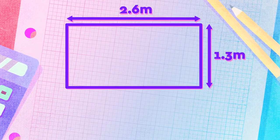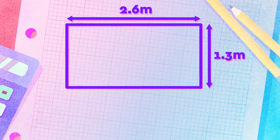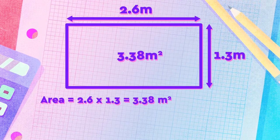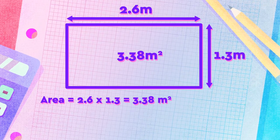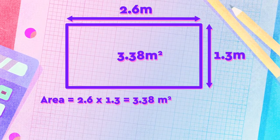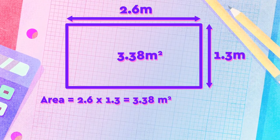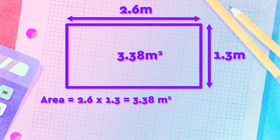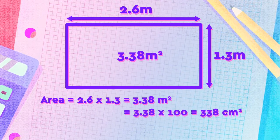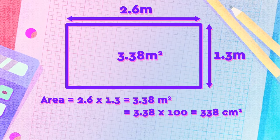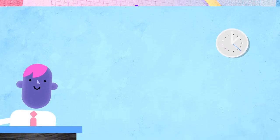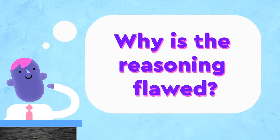Let's take a look at an example. We have a rectangular shape with sides 2.6 meters and 1.3 meters. The area of this shape is 3.38 meters squared. If asked to express the answer in centimeters squared, many students think: meters to centimeters is times 100, so the answer should be 3.38 times 100, or 338 centimeters squared. Can you work out why their reasoning is flawed?